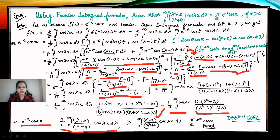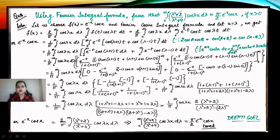The key points to remember: recognize which type of Fourier integral to apply — if there is a cos term, apply the Fourier cosine integral theorem; if there is a sine term, apply the Fourier sine integral theorem. Also, whatever factor is multiplied by π/2 should be taken as your function f(x).